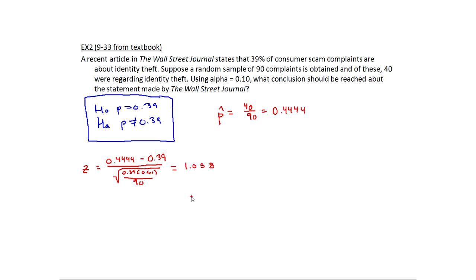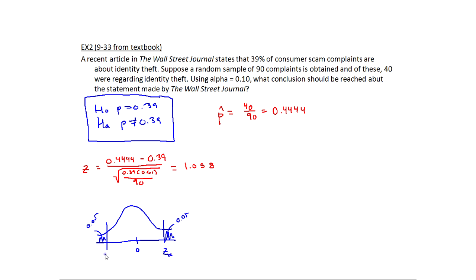Now I need my rejection region. This is a z-distribution and a two-tail test, so half of alpha goes on each side. Alpha is 10%, so I put 0.05 on each side. Using inverse normal of 0.05 (area to the left), I get negative 1.64, which means the positive cutoff is 1.64. My z-score of 1.058 doesn't reach into either rejection region.